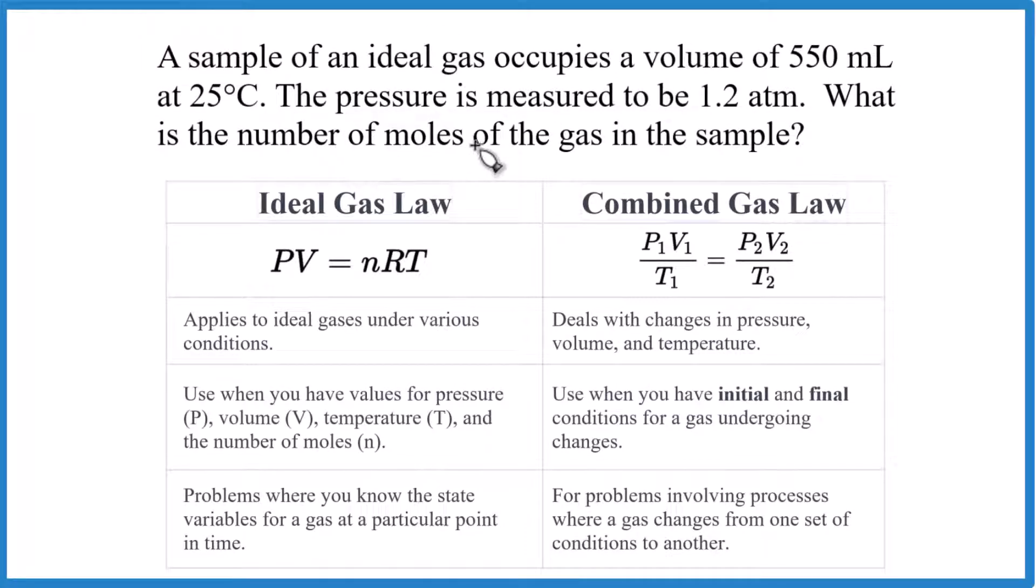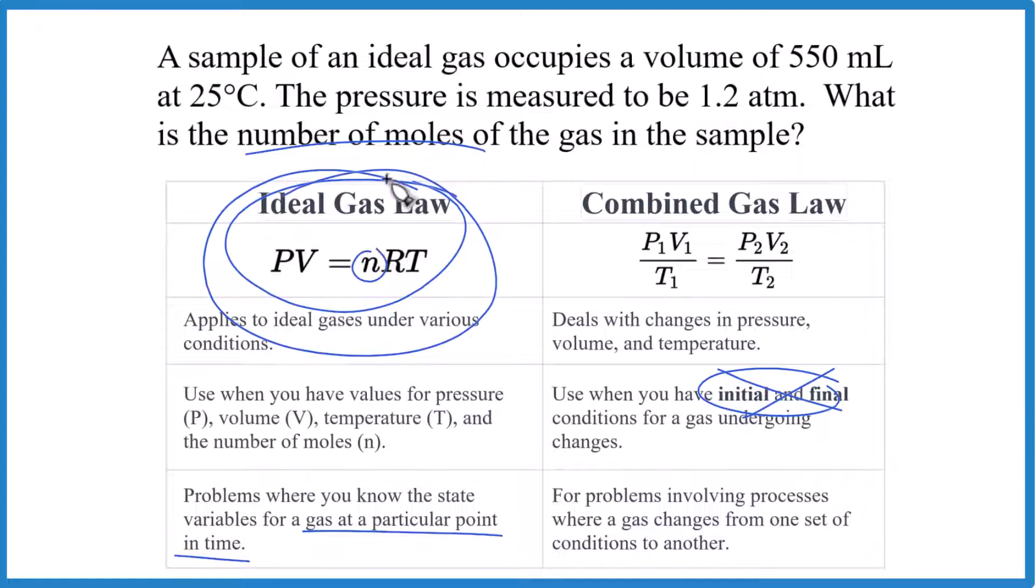When we look at the gas law problem here, they're asking for the number of moles, so it's probably going to be the ideal gas law, PV equals nRT. We don't have an initial and a final. We're just given these conditions for a gas at a particular point in time where we want to find the number of moles. So combined gas law for this problem. Let's do it.